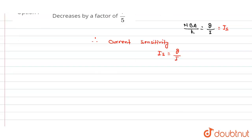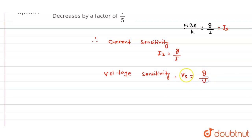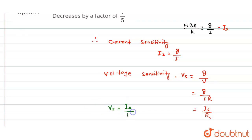The voltage sensitivity is given by Vs and can be written as Vs = θ/V. Since V = IR, we can write Vs = θ/(IR) = (θ/I)/R = IS/R. Therefore, voltage sensitivity Vs = IS divided by R.